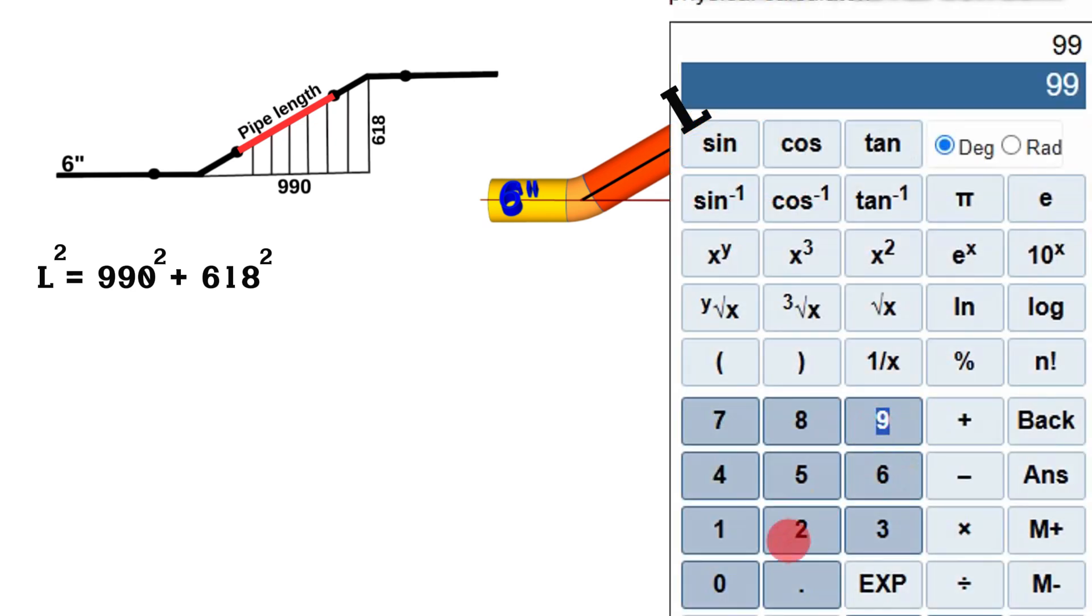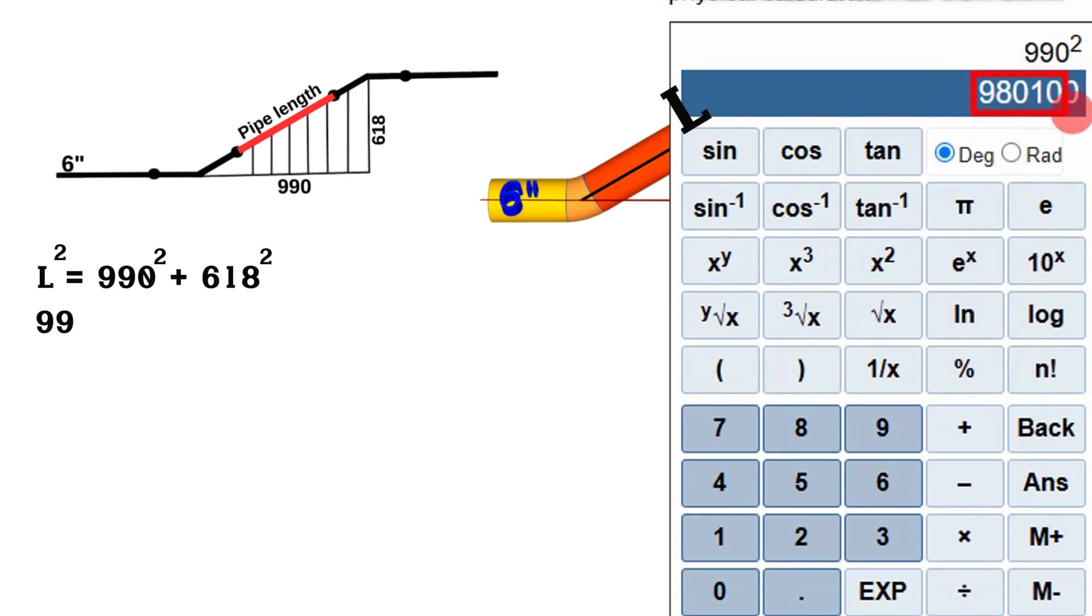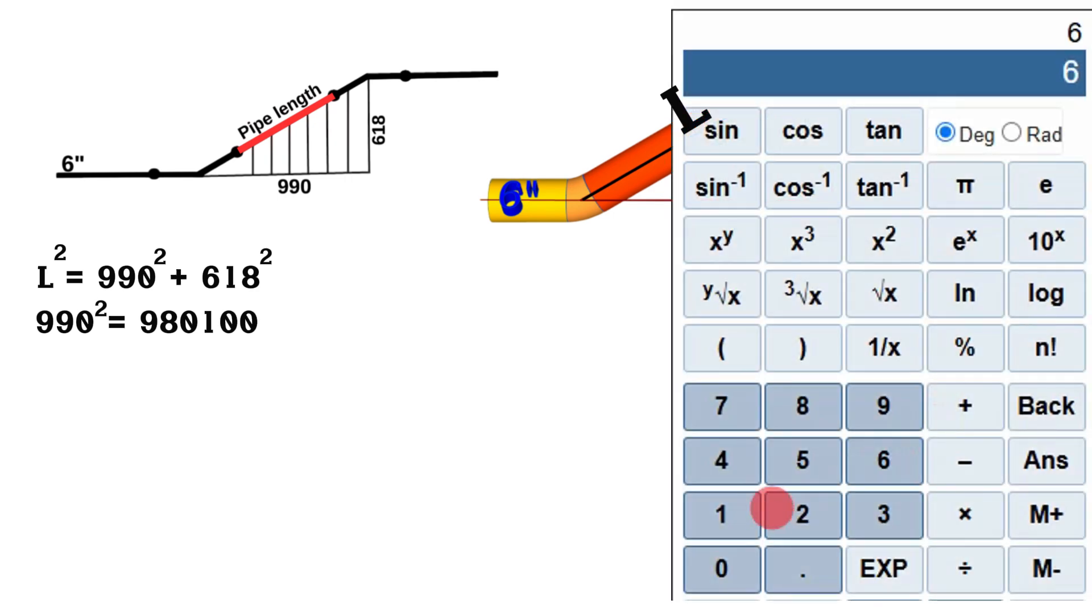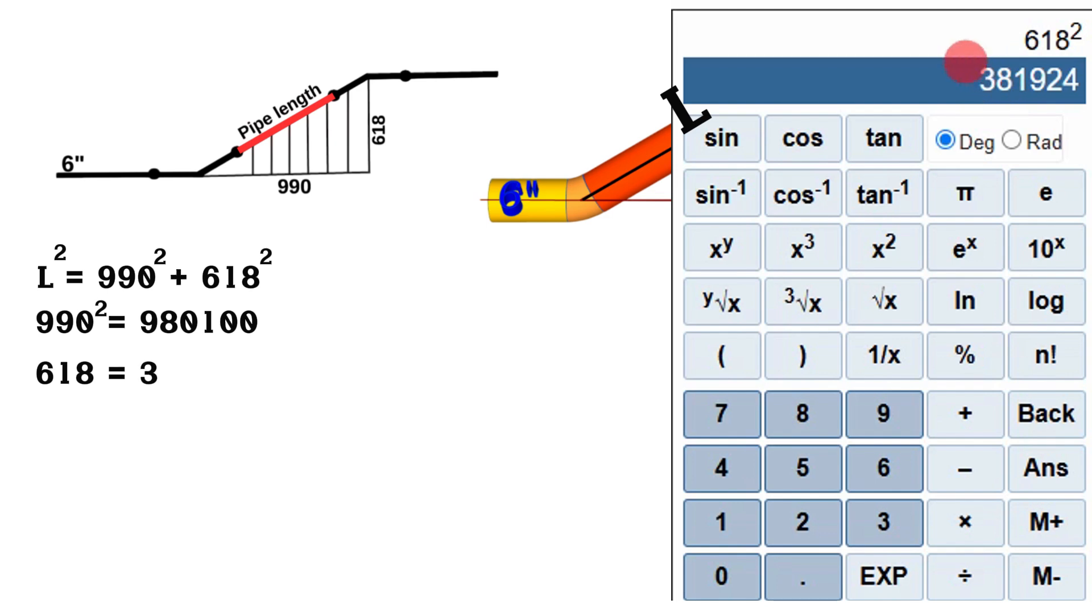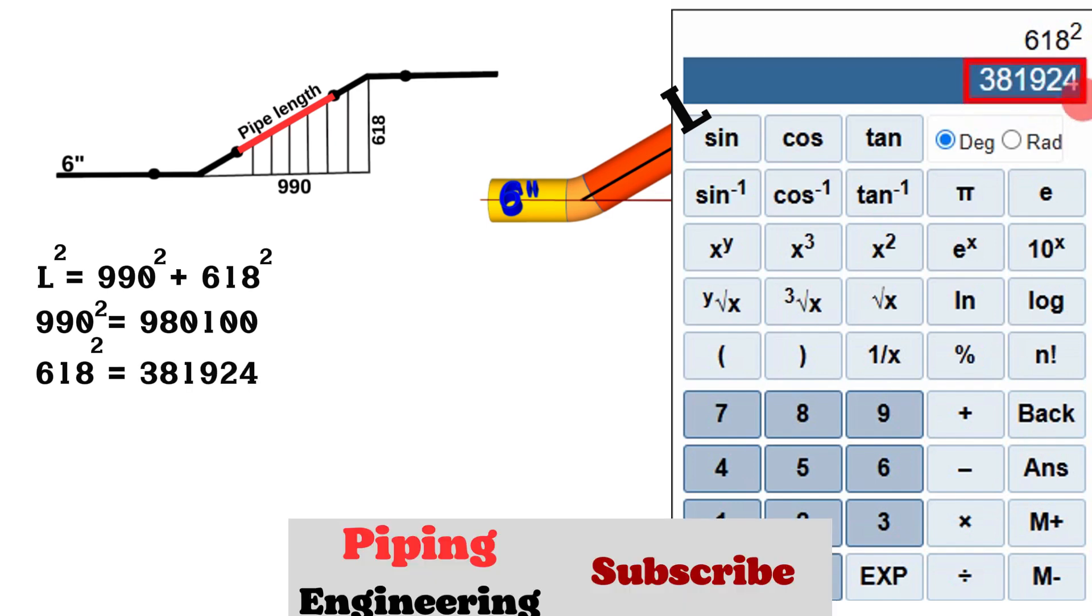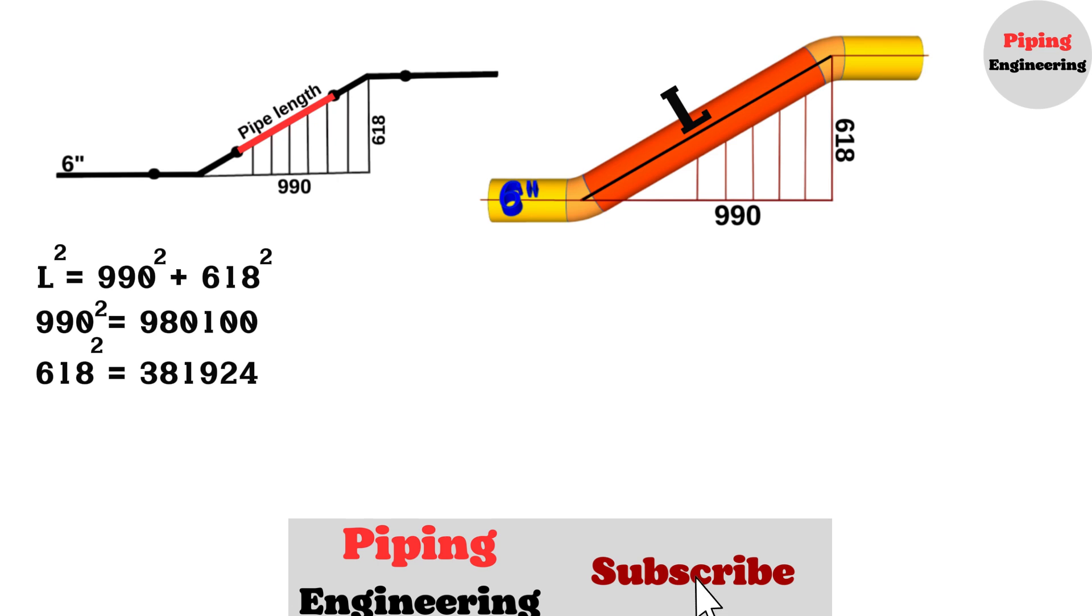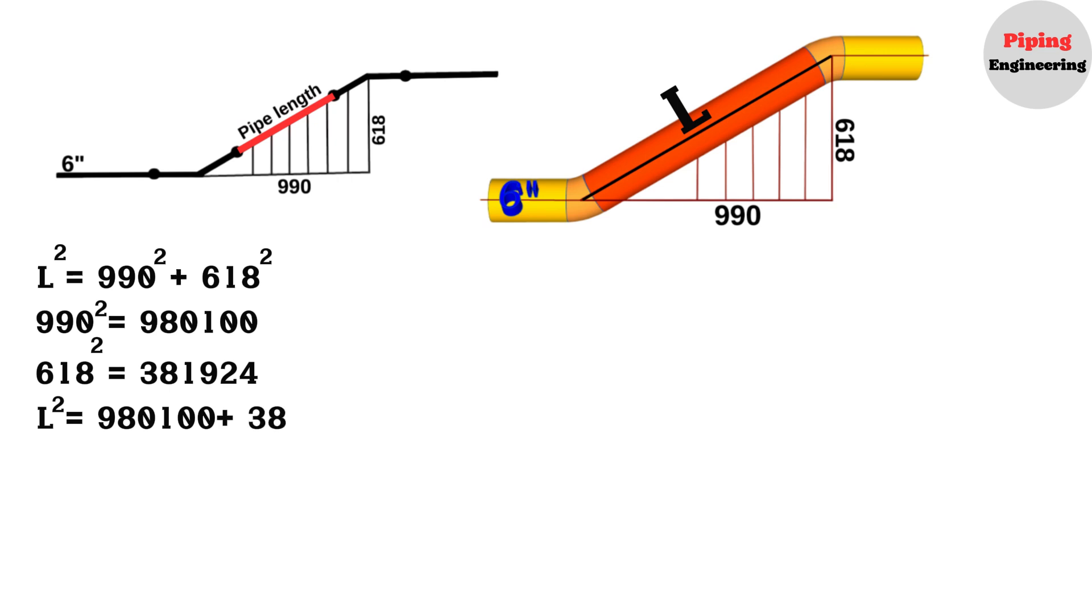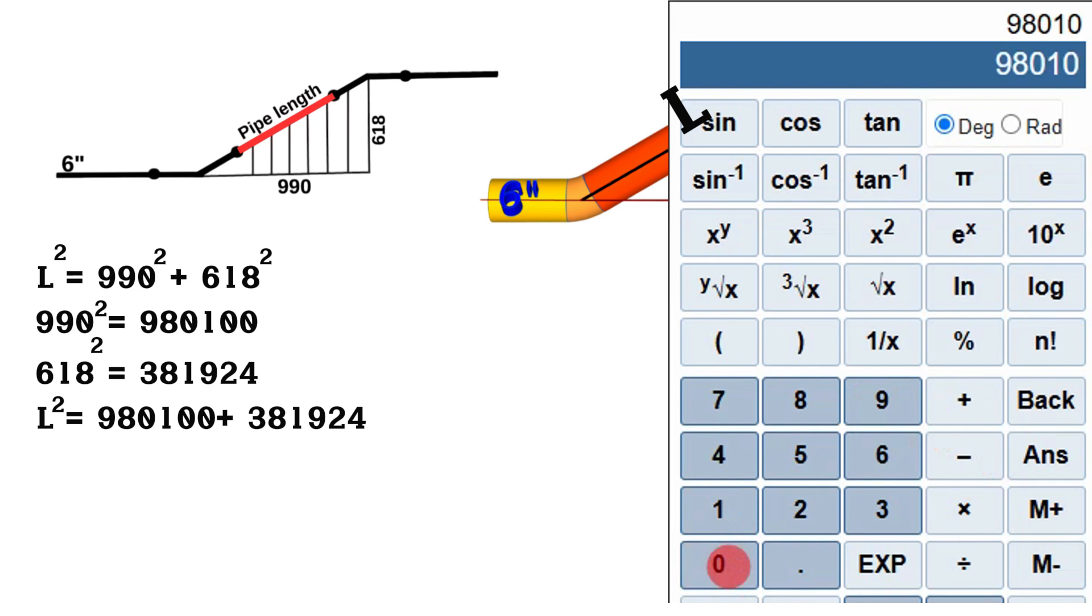Using a calculator, we calculate that the square of 990 will equal 980,100, and the square of 618 will equal 381,924. So, we continue to calculate that L-squared will equal 980,100 plus 381,924. Using the calculator again, we find that 980,100 plus 381,924 equals 1,362,024.